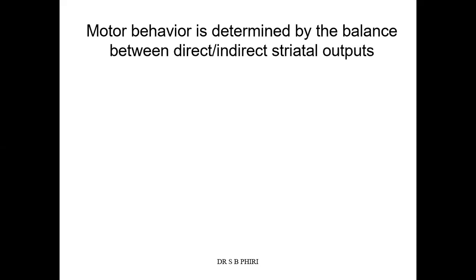These diseases affecting the motor system are mainly also affecting structures of the basal ganglia. The basal ganglia is involved in coordination of movements and modulation of motor movements. So if certain structures are damaged within the basal ganglia, it will result in two specific diseases that we'll be discussing here.